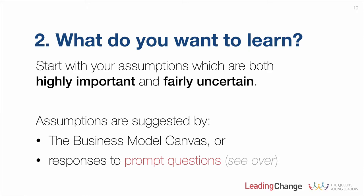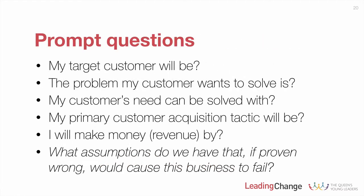The big thing when looking at our assumptions and working out what we want to learn is that we need to start with those assumptions that are both highly important for our business and fairly uncertain — because the combination of these two elements means they have the possibility to derail our entire idea. A good source of these is the business model canvas — every entry you've made suggests an assumption you're making. A second source is a really useful series of prompt questions, which there's a more comprehensive list of in the book, Talking to Humans. By answering these questions you can very quickly identify a list of starting assumptions you need to validate.